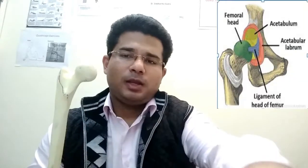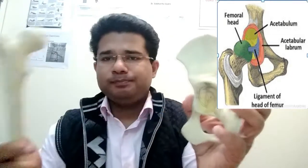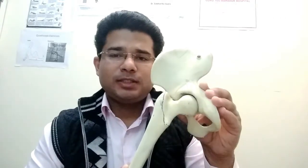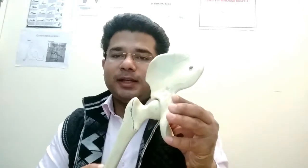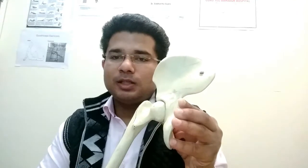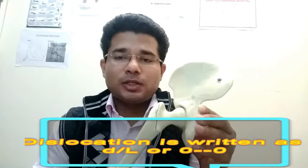Before we discuss hip dislocation, we should know what the hip joint is. Hip joint consists of the femur — that is the head of the femur — and the acetabulum. The hip joint is formed between these two surfaces. Anything that can lead to loss of contact or loss of congruity between the two surfaces is called a dislocation.